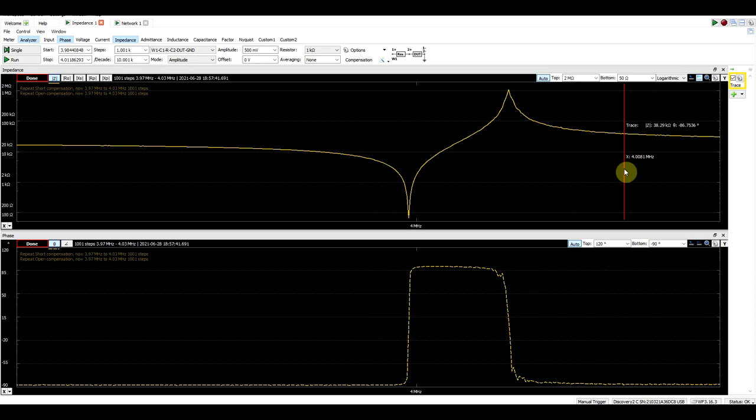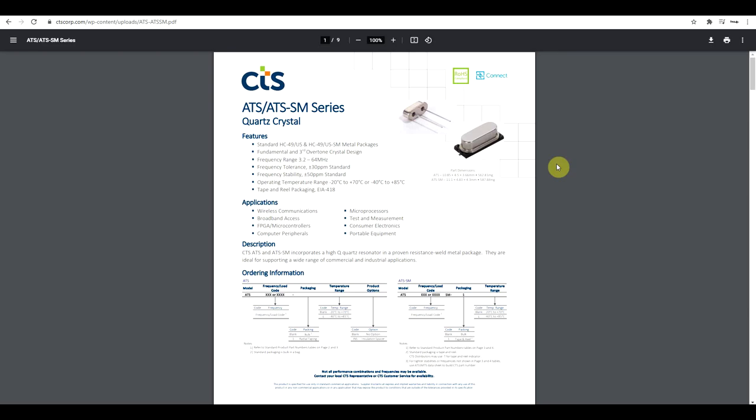Now if we look at this graph in a bit more detail, we will also notice that none of the two resonance frequencies is at 4 megahertz. So the first resonance is at 3.9997, the other is at 4.003. And now normally this is not a measurement error. It's perfectly normal to see this sort of graph.